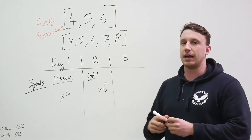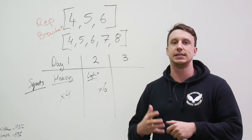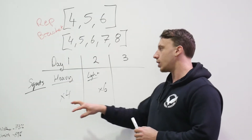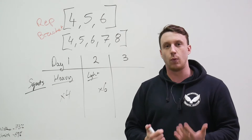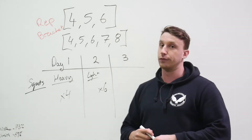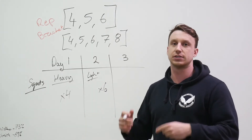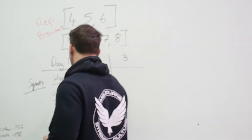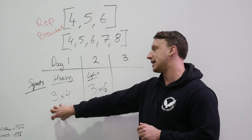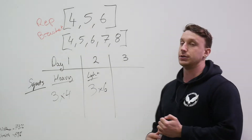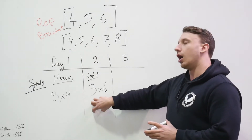Now we have to work out our volume. We're going to use reps to determine intensity and sets to determine volume. You need to look at how many sets of squats you were doing in your one-day-a-week frequency — let's take an example of four sets. Now we're going to increase that volume across two days, taking a small step up to six sets per week: three sets on each of our heavy and light days. So on our heavy day we're doing three sets of four, and on our light day three sets of six. We recommend that if you want to increase volume, you first increase it on your lighter day.